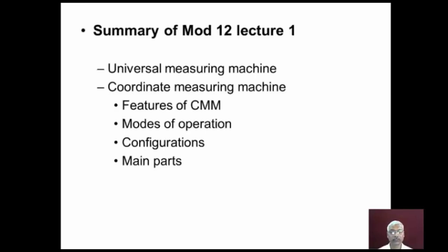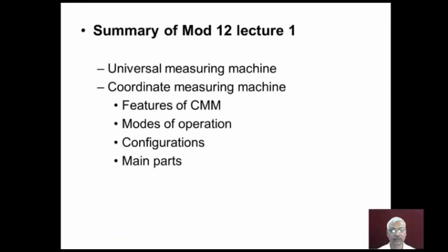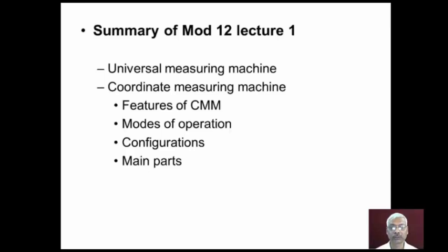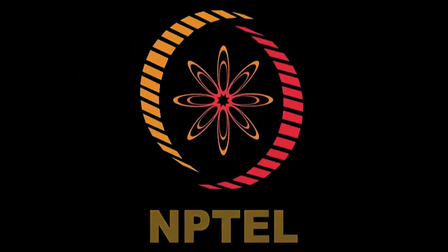In summary, Lecture 1 covered various aspects of the universal measuring machine, features of the coordinate measuring machine, different modes of operation of the CMM, different configurations of CMM, and the main parts of CMM. The discussion on different aspects of CMM will continue in the next lecture.